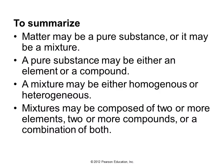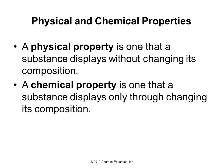To summarize: matter may be a pure substance or it may be a mixture. If it's a pure substance, it may be either an element or a compound. A mixture may be either homogeneous or heterogeneous. Mixtures may be composed of two or more elements, two or more compounds, or some combination of both.